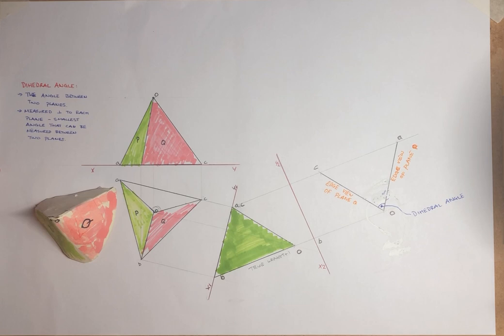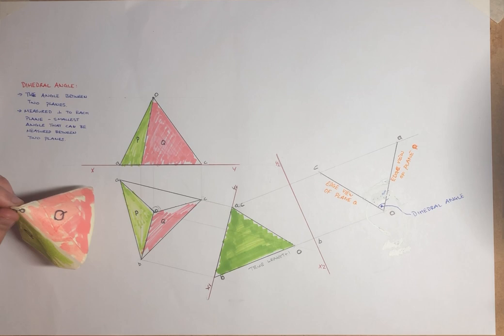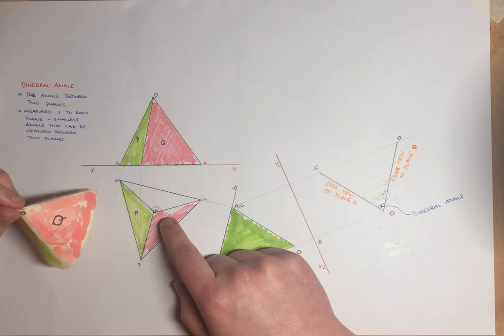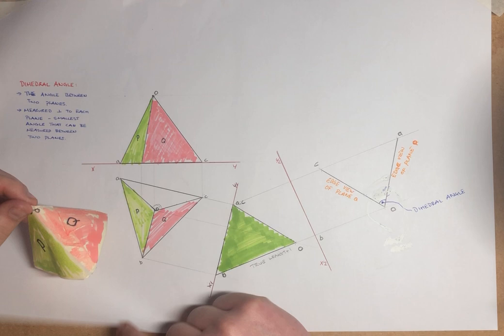So firstly what we need to do is we need to identify a line of intersection in our plan. So just here, we want to intersect these two surfaces here, P and Q. So that means we're going to identify our line of intersection as our line OB.